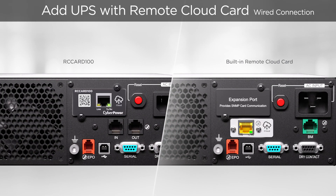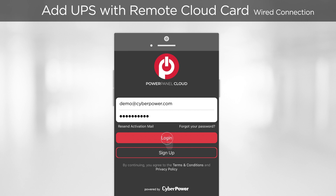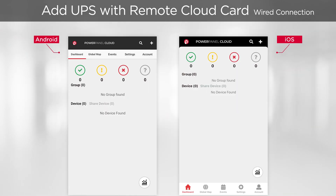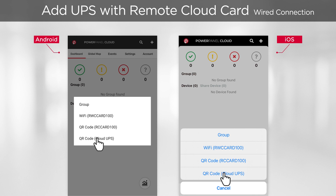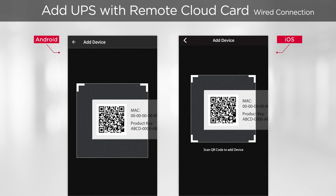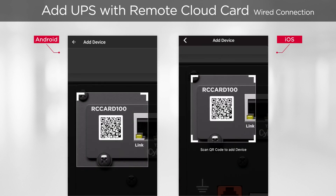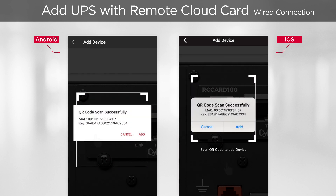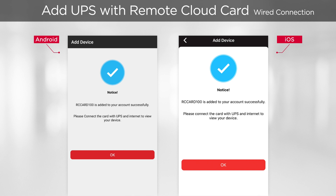To use the wired connection card, first connect it to a working network with internet accessibility. The yellow LED will turn on. Then open the PowerPanel app and log in with your registered account. We will add the UPS to the cloud through QR code. Tap Add, select QR code Cloud UPS if your UPS comes with a built-in remote cloud card, or select QR code RC Card 100 if it is an add-on to your UPS. Scan the code on the label affixed to the UPS or on the card. Once the scan is successful, a confirmation box will appear. Tap Add to add the UPS to the cloud, then tap OK to continue.